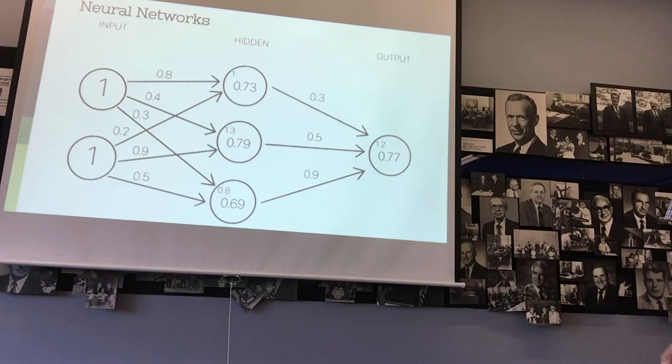So, here is just a bigger example. There's, instead of one input, there's two inputs. Instead of one in the middle, there's three, but there's still one output. And you can see all of these connections are going to have different weights, and that's going to create these different outputs. So, does anyone have any questions on neural networks?